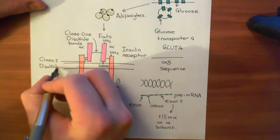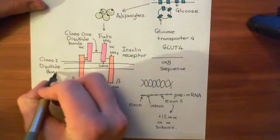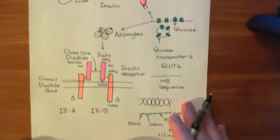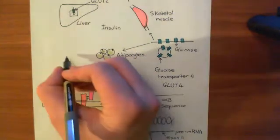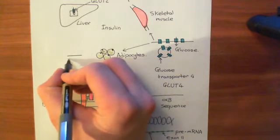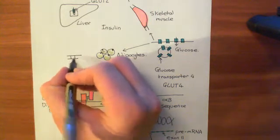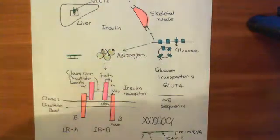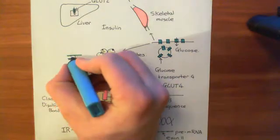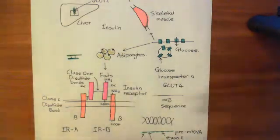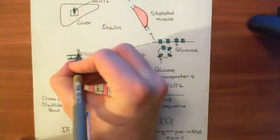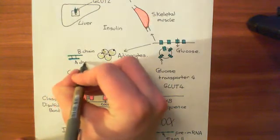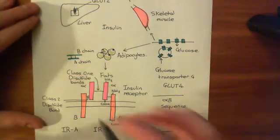We're now ready to discuss what happens when insulin binds to the insulin receptor. First, a reminder of the structure of insulin: it consists of two polypeptides bound together by two disulfide bonds — the B chain, which is the slightly longer one in green, and the A chain in blue, linked together by disulfide bonds.